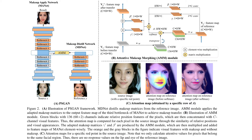Then, back to the AMM module. More specifically, the AMM module calculates an Attentive Matrix A to specify how a pixel in the source image X is morphed from the pixels in the reference image Y. Intuitively, makeup should be transferred between pixels with similar relative position on the face, and the attentive values between these pixels should be high. Moreover, to avoid unreasonable sampling of pixels with similar relative position but different semantics, we also consider the visual similarity between pixels.